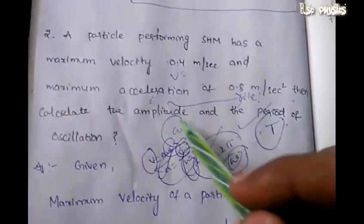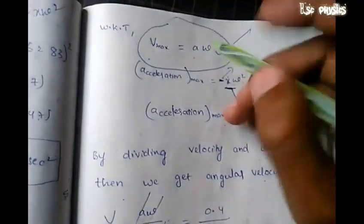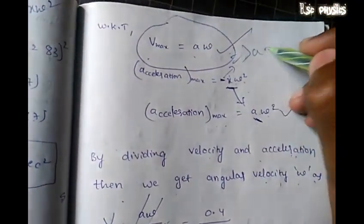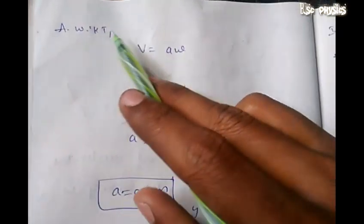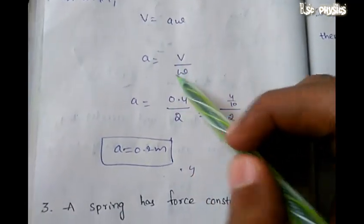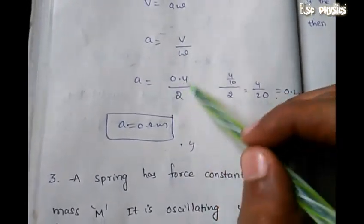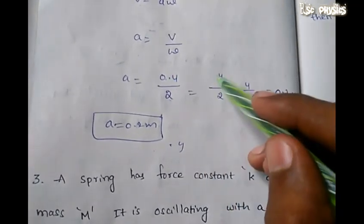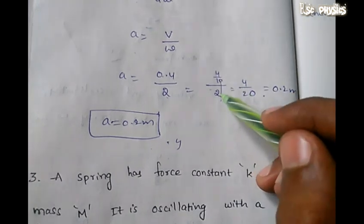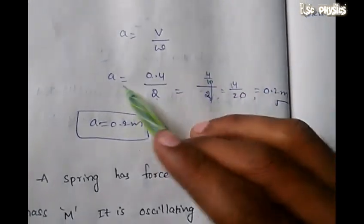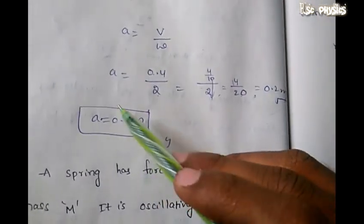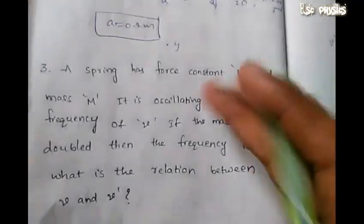Now we find the amplitude. We know that V equals A omega, so A equals V by omega. Therefore A equals 0.4 divided by 2, which equals 0.2 meters. So the amplitude A equals 0.2 meters.